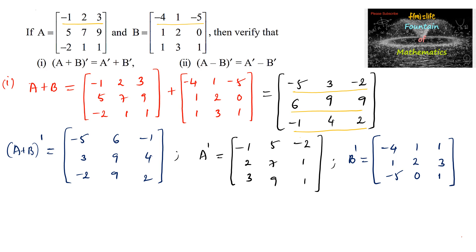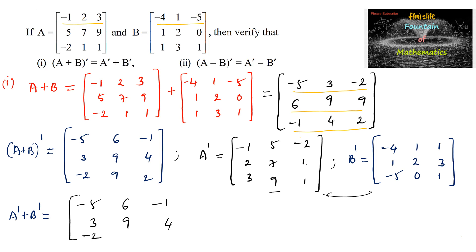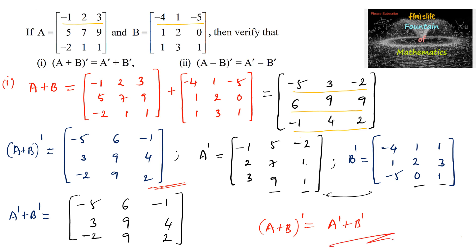Now we compute A transpose plus B transpose by adding the two matrices: −1+(−4)=−5, 5+1=6, −2+1=−1; 2+1=3, 7+2=9, 1+3=4; 3+(−5)=−2, 9+0=9, 1+1=2. We observe that (A+B) transpose and A transpose plus B transpose are the same matrix, so the first property is proved.